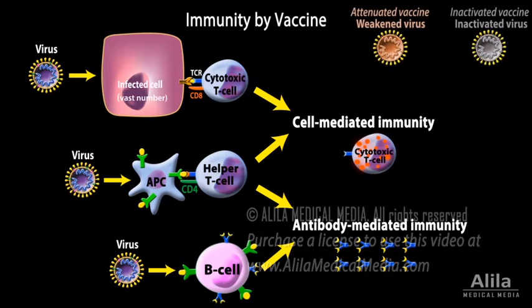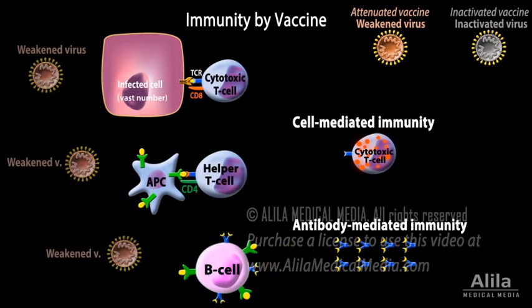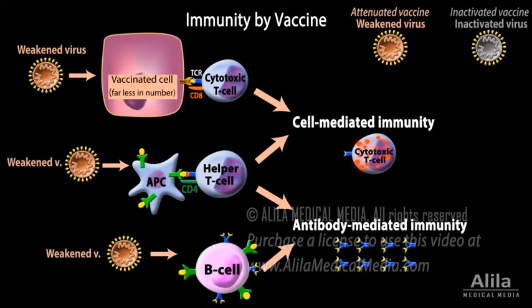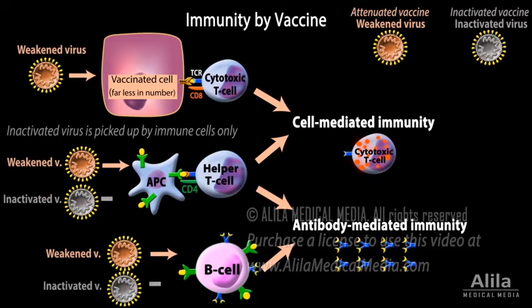Vaccines deliver viral antigens to trigger immune responses without causing the disease. The events of a vaccine-induced immune response are similar to that induced by a natural infection, although some types of vaccines may induce only antibody-mediated immunity and may therefore be less effective.